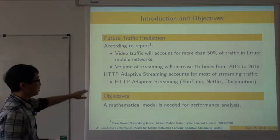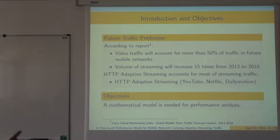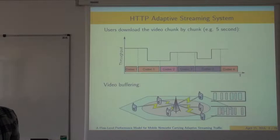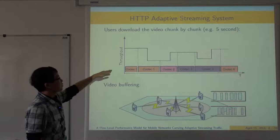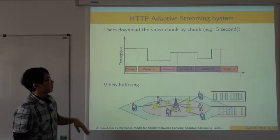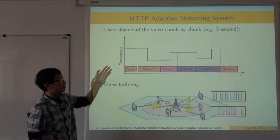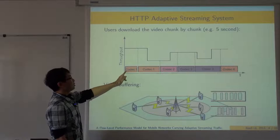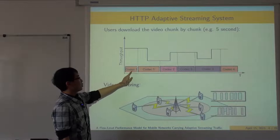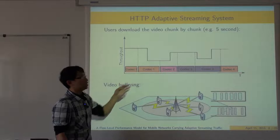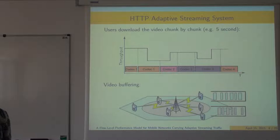What is HTTP adaptive streaming? It works like services such as YouTube, Netflix, and Dailymotion. A user in a cellular network will experience varying throughput during their video consumption. They download the video chunk by chunk — for example, five-second chunks — and then start downloading a chunk with codec 1. When they finish, they download the next chunk based on the throughput observed at that time, choosing different codecs based on throughput. This is called adaptive streaming.